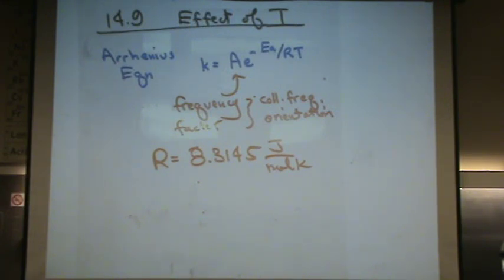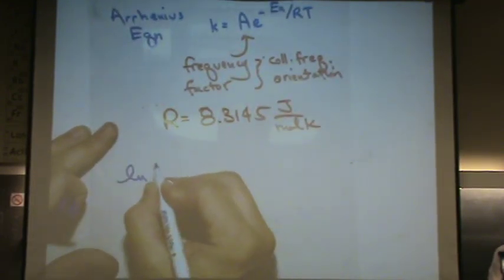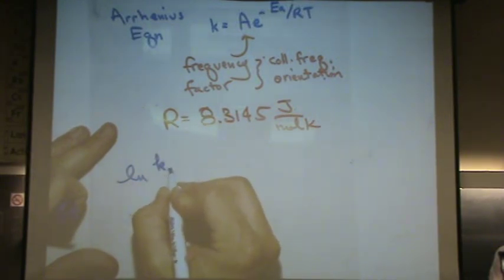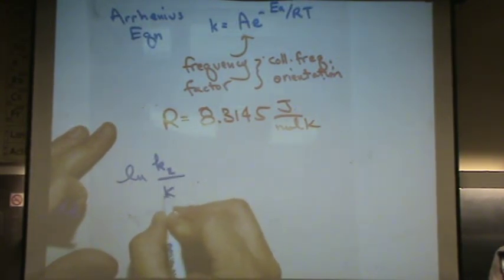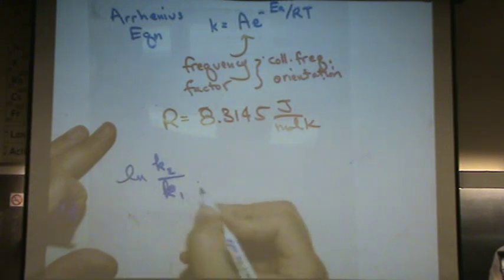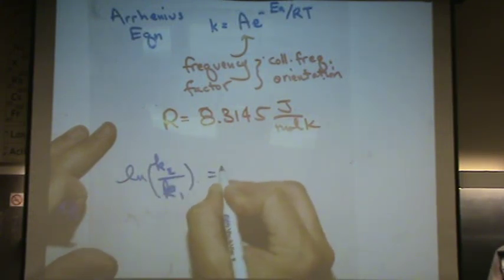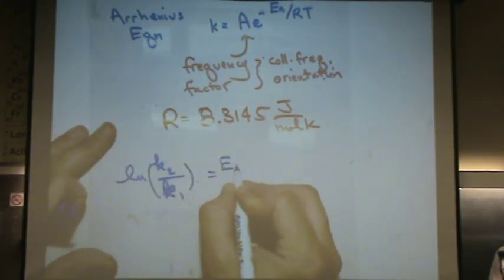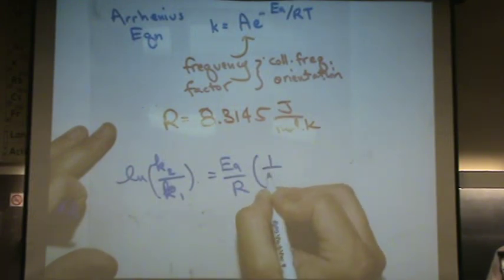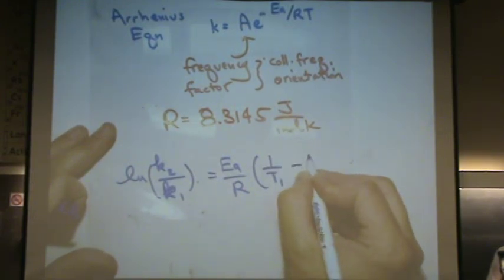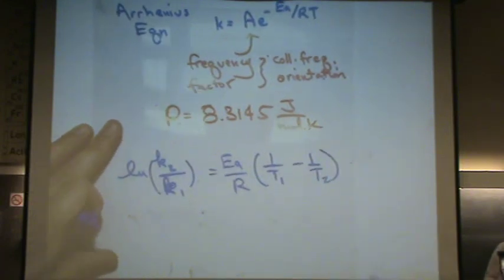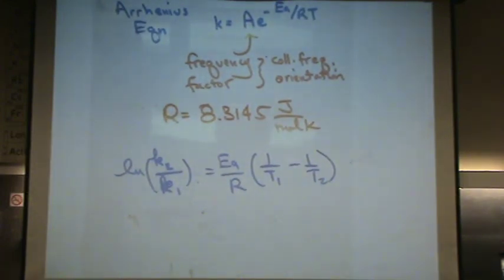This equation, analogous to the Clausius Clapeyron, if you vaguely remember that, can be set up for two points of K. K2 over K1 is equal to the activation energy over R, 1 over T1 minus 1 over T2. This is analogous to the Clausius Clapeyron equation. If you can't read this part, it says K2 over K1.